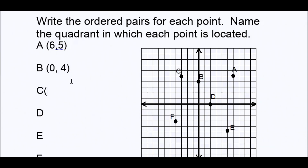What about C? We start at the origin, then first we go right or left — we went left: one, two, three. So that would be negative three. Then from here we went up: one, two, three, four, five. Up is positive, so five up is positive five. So our coordinates are (-3, 5).